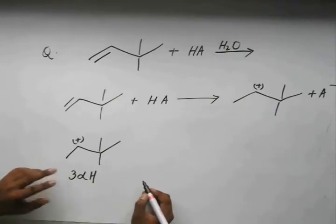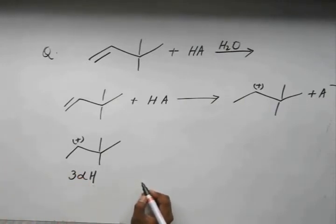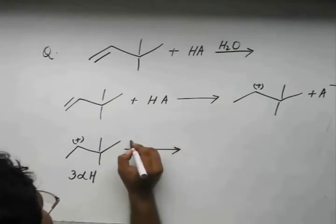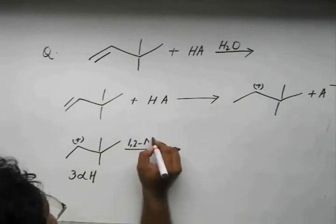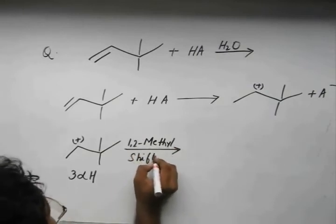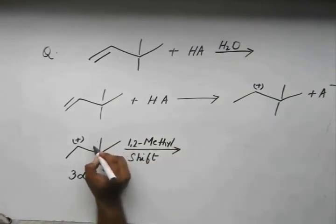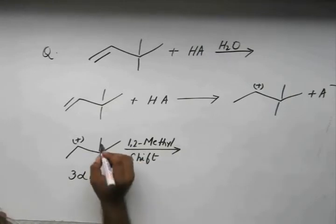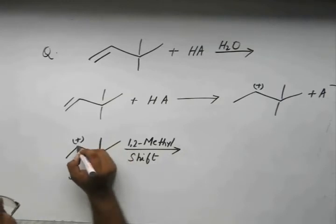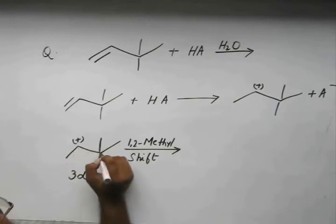We have 1 lifeline, 1,2 methyl shift. What happens is CH3- from either of these two, both are equivalent, say this CH3 takes the bonded pair of electrons from here, jumps to this place, attaches to this carbon leaving a plus charge over here.